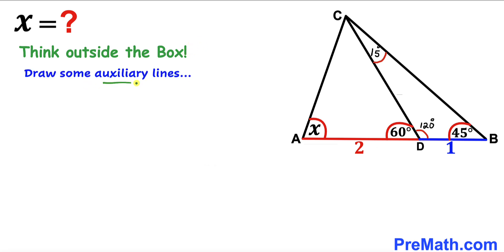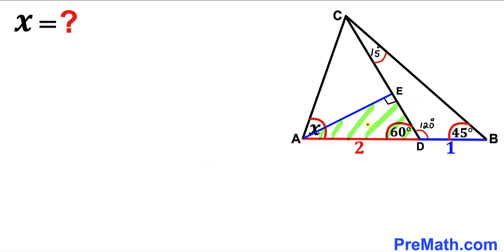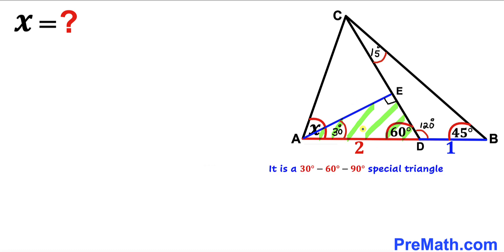I have dropped a perpendicular AE onto line CD. Now focusing on right triangle AED, we know this angle is 60 degrees and this angle is 90 degrees, so therefore the remaining angle must be 30 degrees.